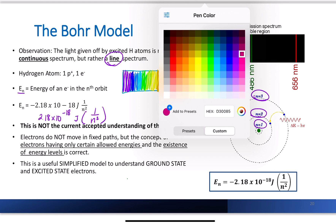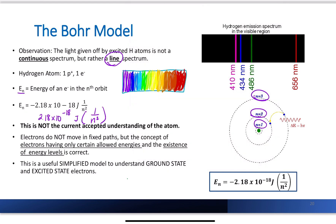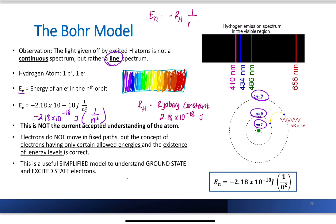The value 2.18 times 10 to the negative 18 is known as the Rydberg constant. The Rydberg constant itself is a positive number — 2.18 times 10 to the negative 18 joules — but the equation itself is negative. So the equation is: E-sub-n equals negative Rydberg constant times 1 over n squared, where n is the energy level. This lets us calculate the exact energy of that level for any level in the hydrogen spectrum.